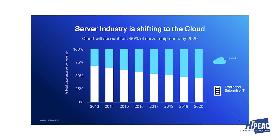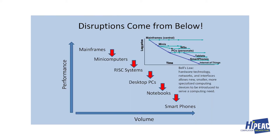The server industry is moving more and more to the cloud. Public clouds — Amazon Web Services, Google, and Microsoft — are becoming quite popular, and by 2020 more than 50% of server processors shipped will go into the cloud. If you look at the history of computing, there have been disruptions every few years. When I started graduate school in 1970, all we had were mainframes.